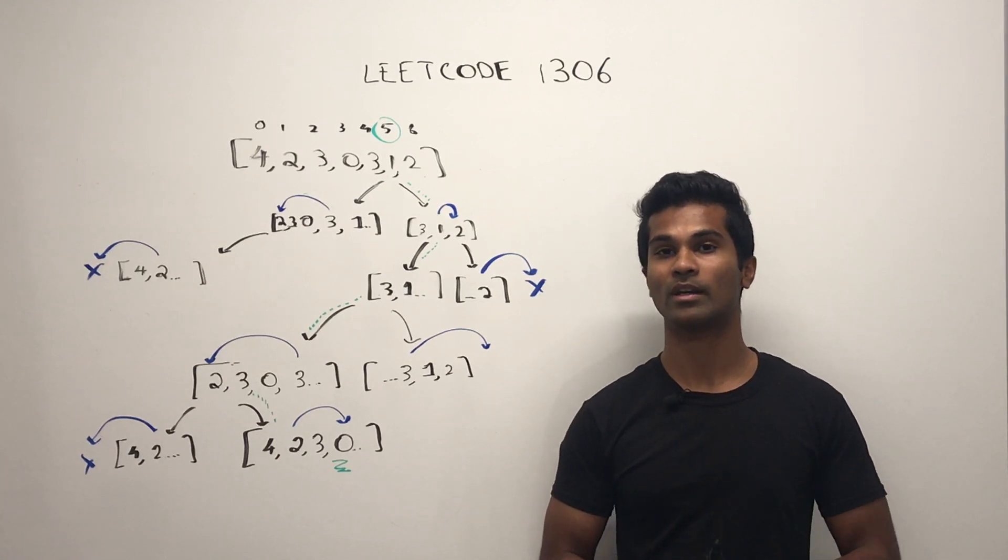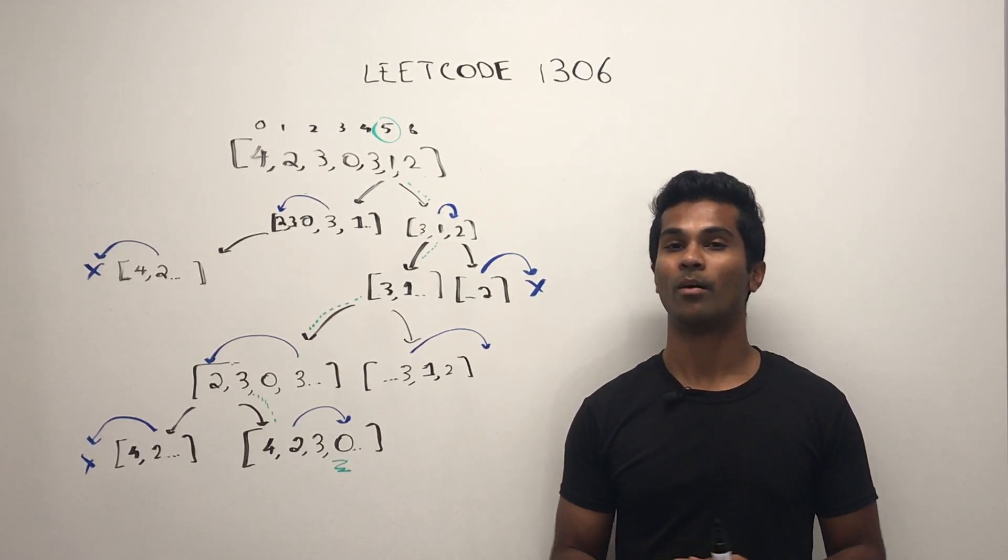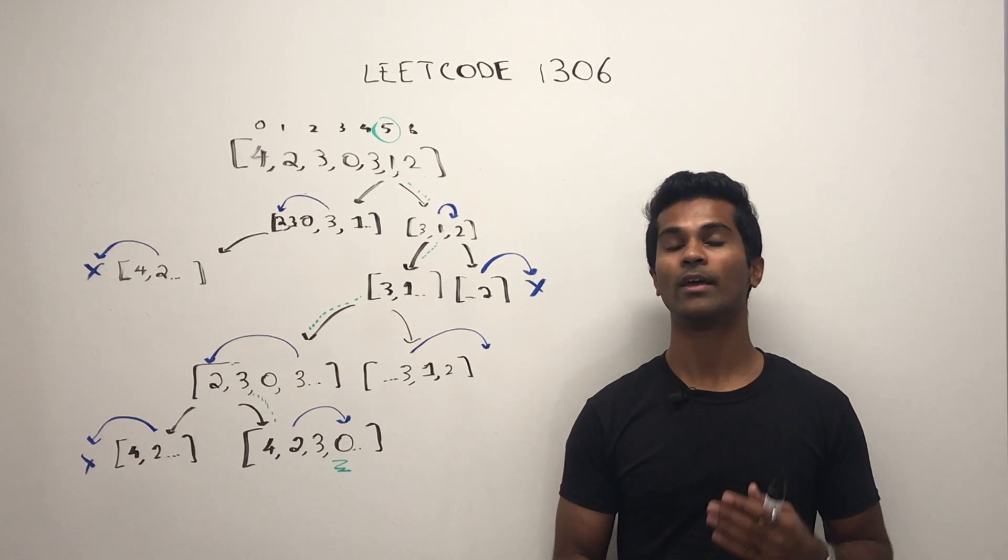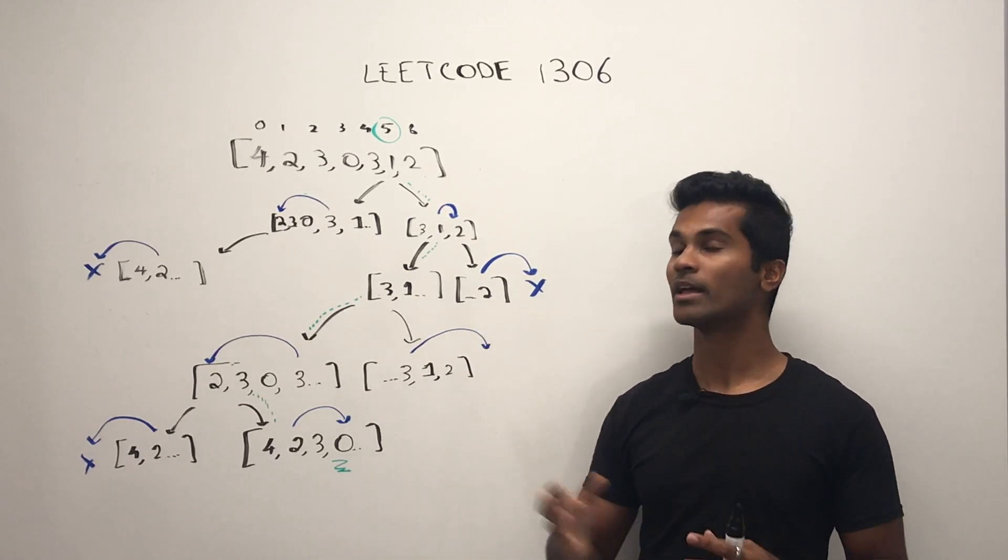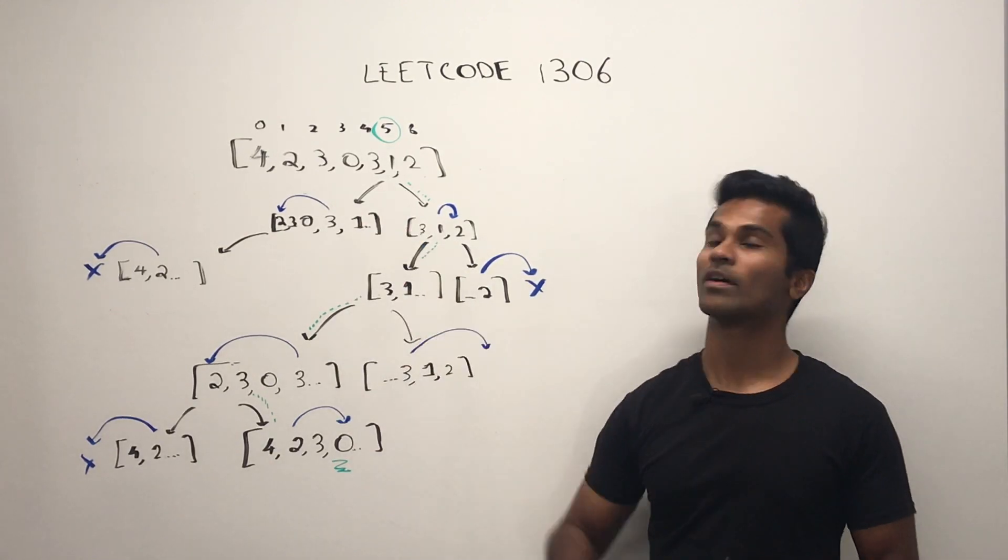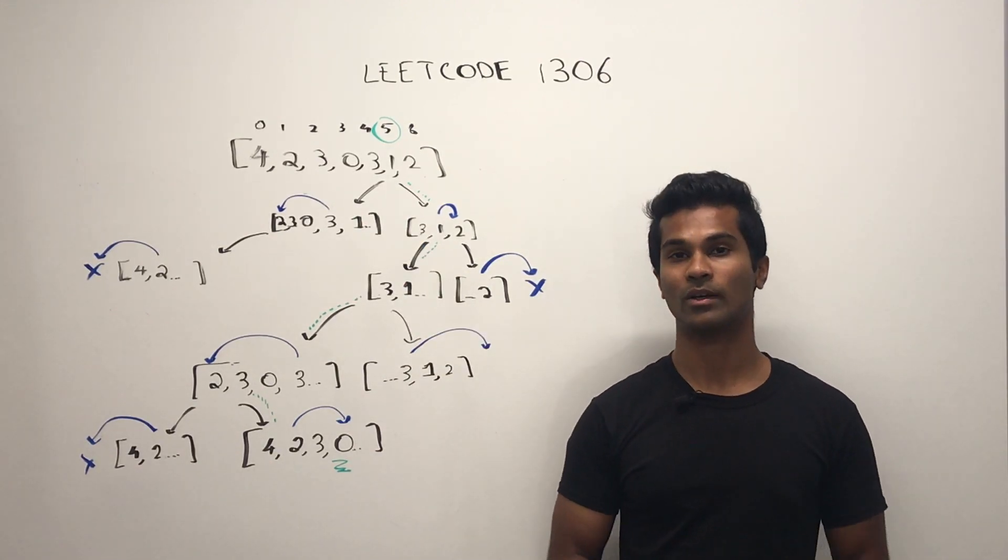So in order to do that, we're going to keep a variable count or n or something like that, and make sure we return false if the total number of times we visited spots in the array is greater than or equal to the total number of elements in the array.